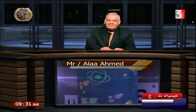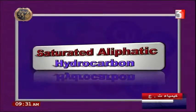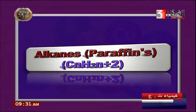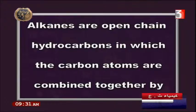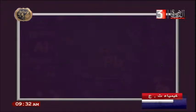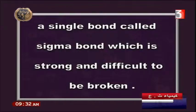Welcome back. Today we continue our explanation of organic compounds, which are essential to our life. We start with saturated aliphatic hydrocarbons — alkanes, with the general formula CnH2n+2. Alkanes are open-chain hydrocarbons in which carbon atoms are combined together by a single bond, called a sigma bond, which is strong and difficult to break.